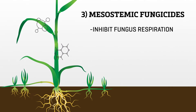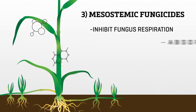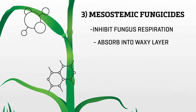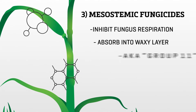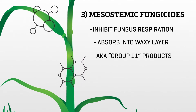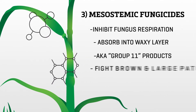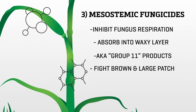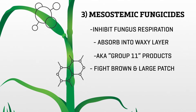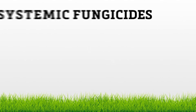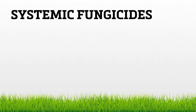For something simply super, other systemic fungicides like mesostemic fungicides are great. These fighters inhibit the respiratory chain of the fungus by absorbing into the waxy plant layer. Sometimes called Group 11 products, mesostemic fungicides are effective for brown patch and large patch treatment.